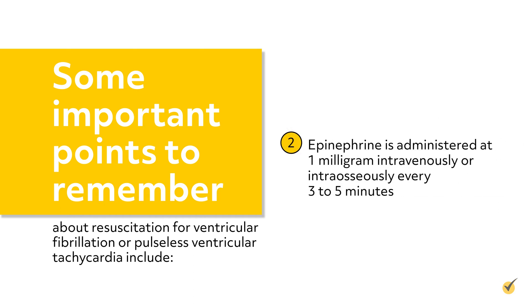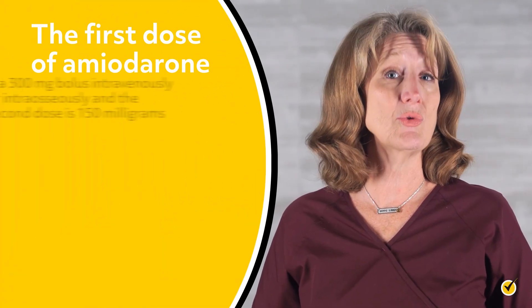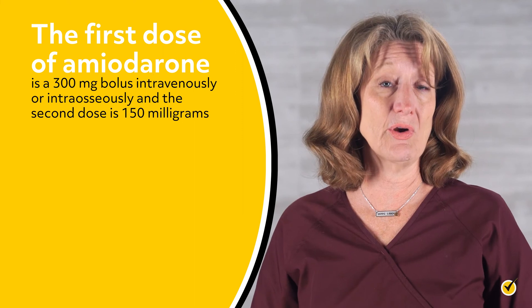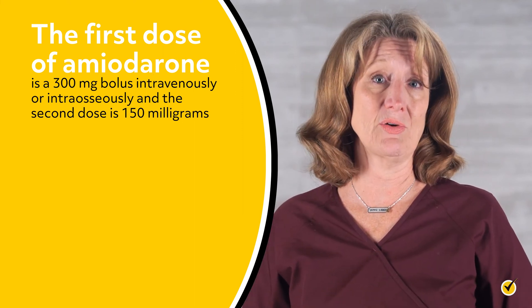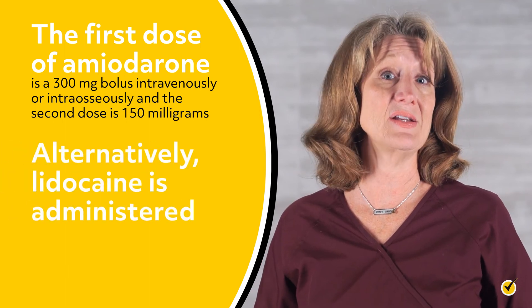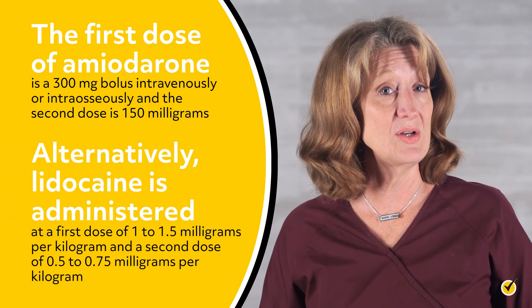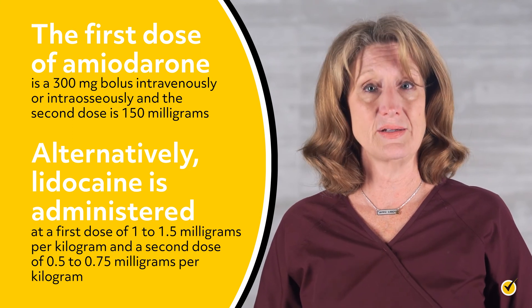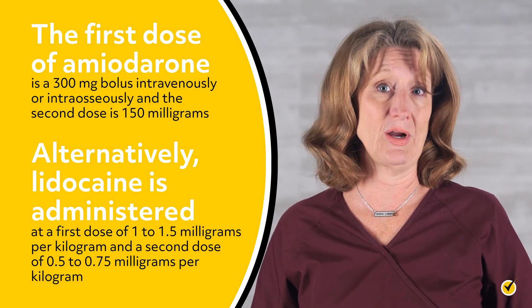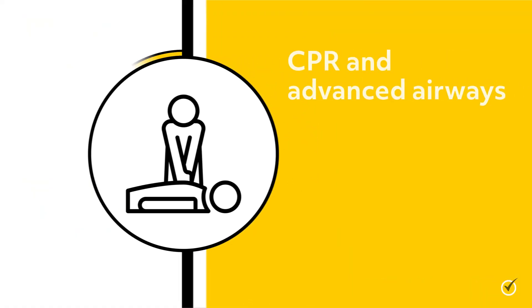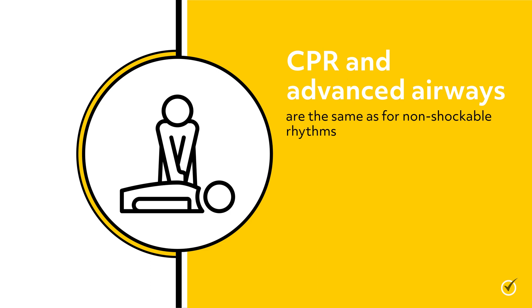Epinephrine is administered at 1 mg intravenously or intraosseously every three to five minutes. The first dose of amiodarone is a 300 mg bolus intravenously or intraosseously, and the second dose is 150 mg. Alternatively, lidocaine is administered at a first dose of 1 to 1.5 mg per kg, and a second dose of 0.5 to 0.75 mg per kg. CPR and advanced airways are the same as for non-shockable rhythms.